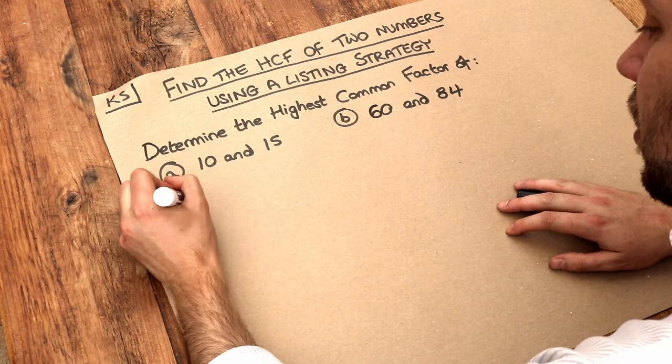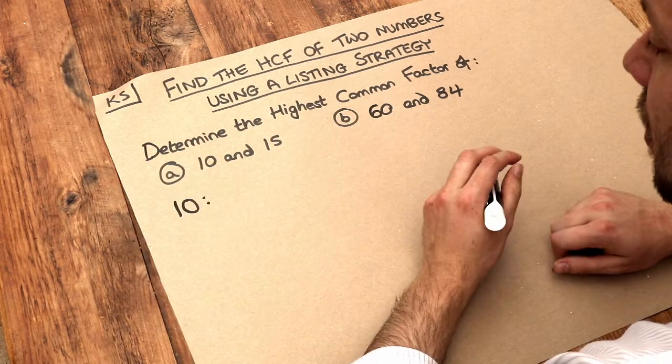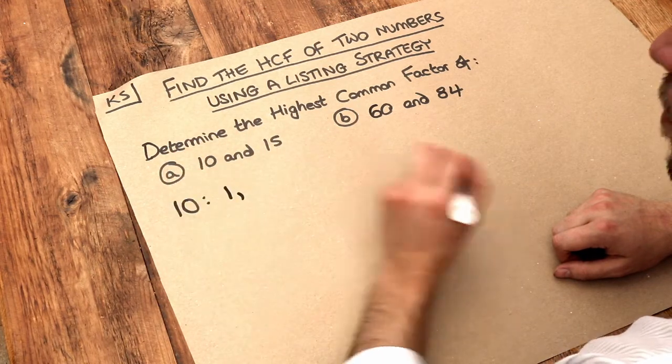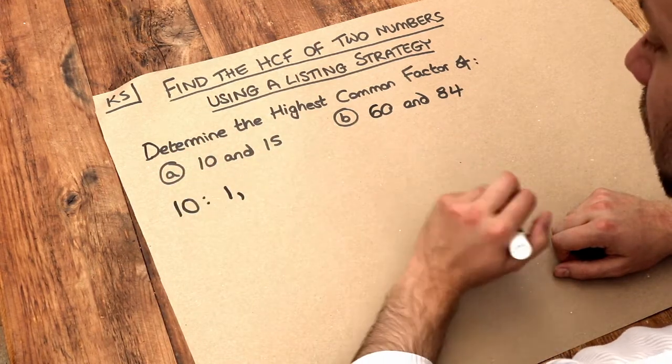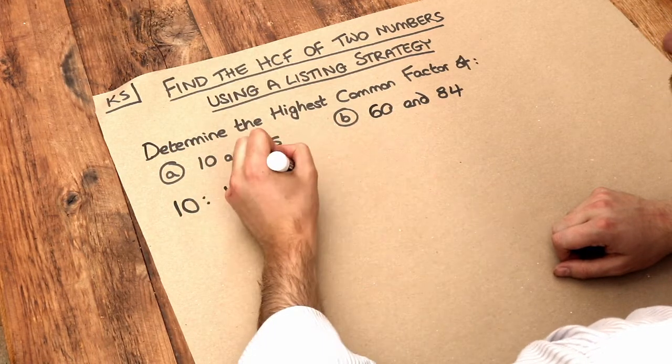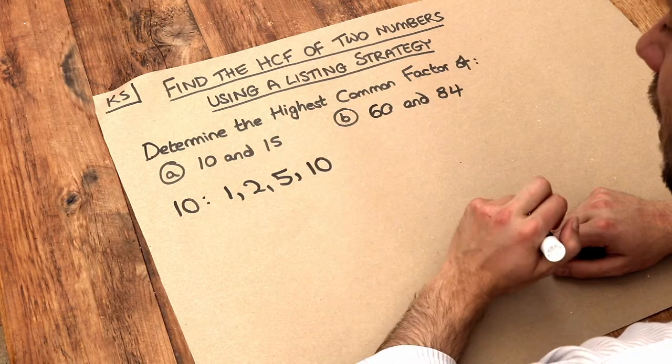So if we were to ask for the factors of 10, we want numbers that go into 10. So 1 is a factor of 10 because you can divide 10 by 1 without remainder. 2 is a factor of 10. 5 is a factor of 10. And 10 is a factor of 10. You can divide any number by itself.